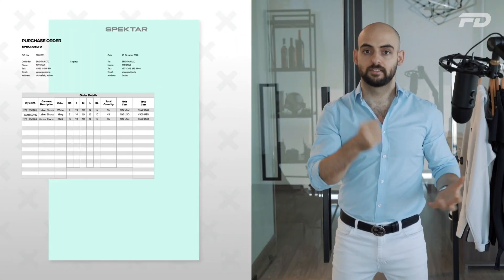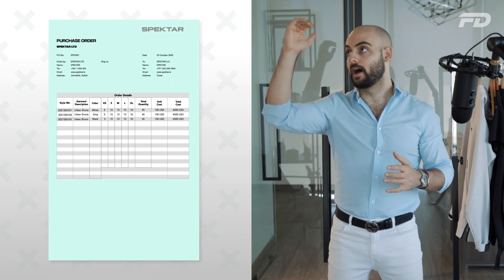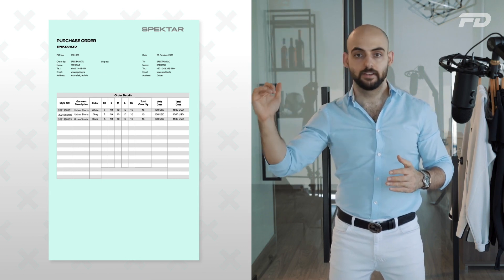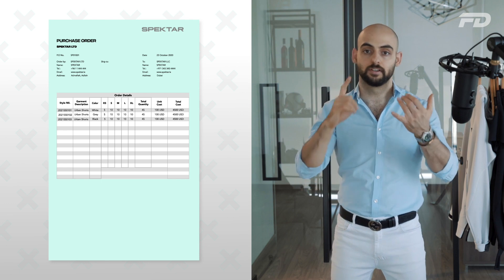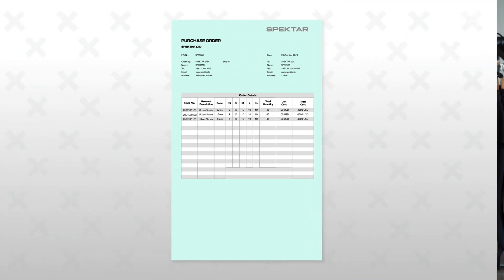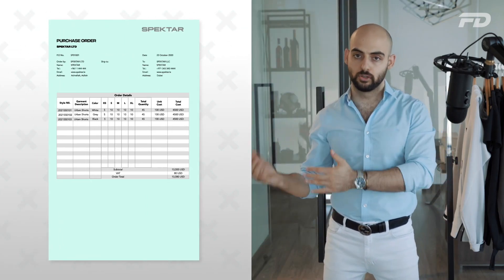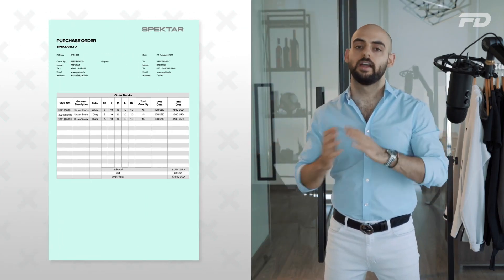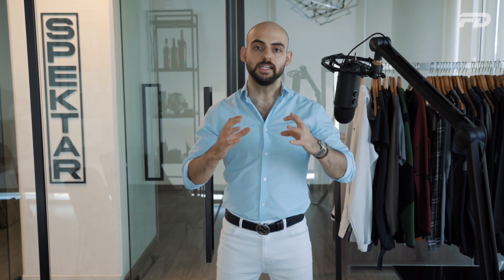Your total cost per line item is the quantity ordered for that style multiplied by the unit price. Add together the total costs for all styles — black, white, and red — to get your subtotal. If applicable, add any sales tax; otherwise, proceed directly to your order total.